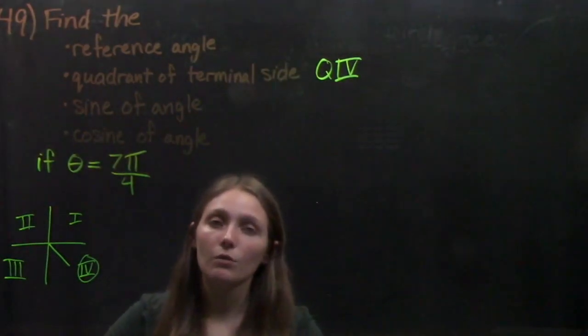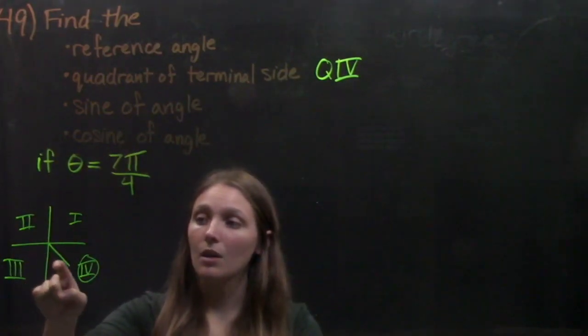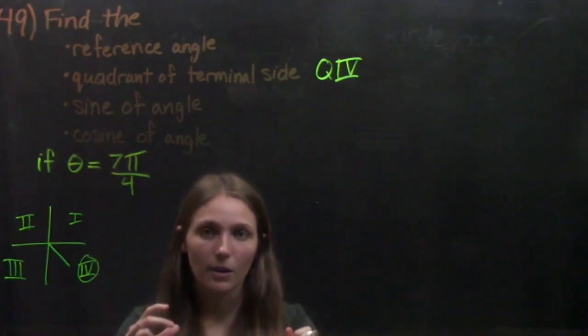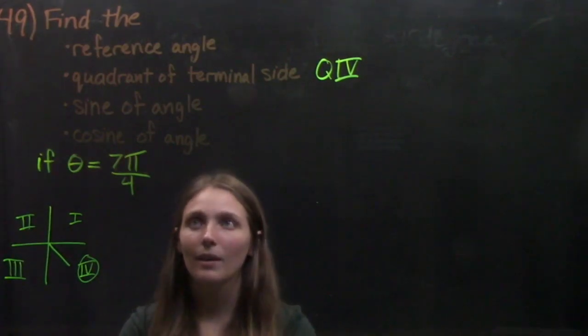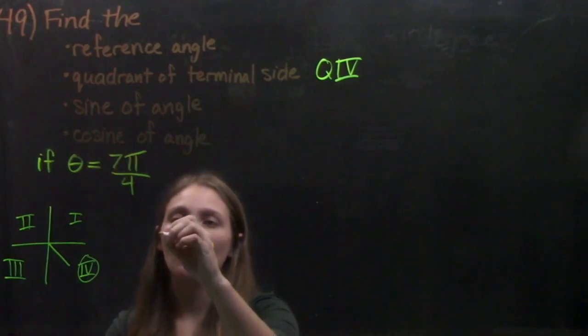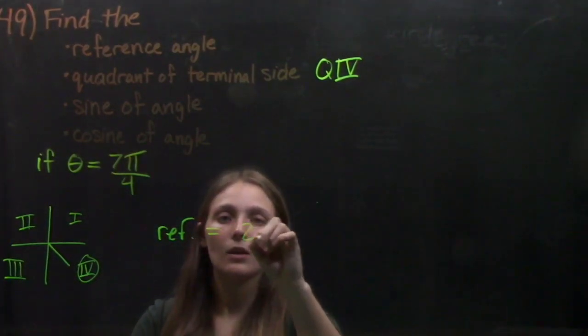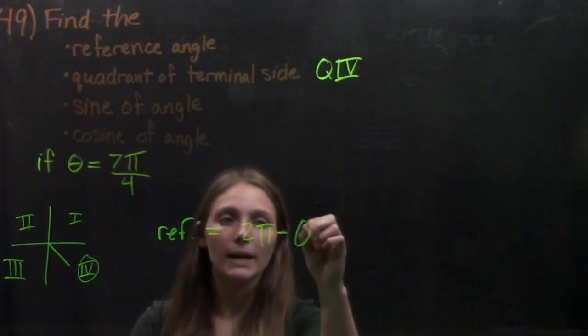So the equation for the reference angle changes depending on which quadrant you're in. If you turn to page 466 in your books, it gives you a nice table of which equation to use when. So since we're in quadrant 4, we have the equation that the reference angle equals 2 pi minus the angle.